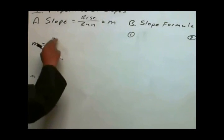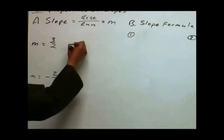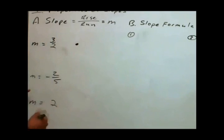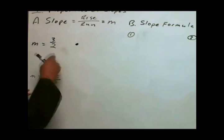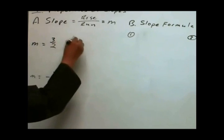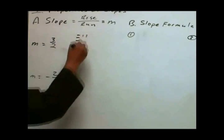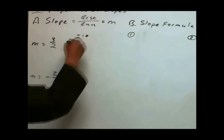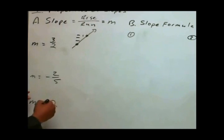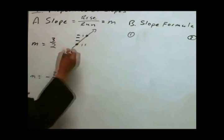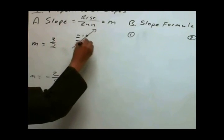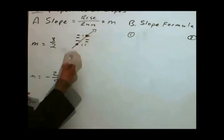Three-halves describes a line that's rising three and running two. We must first have a point to start from, and from there we're going to rise three — one, two, three — and run two — one, two. You can see the direction the line is headed in. You can also run first — run two — and then rise three, and you'll still get the next point.